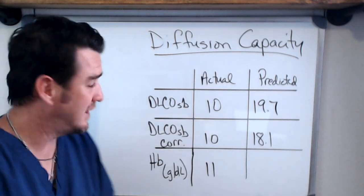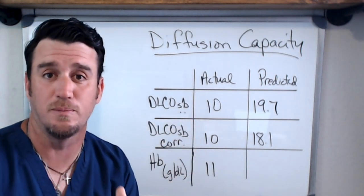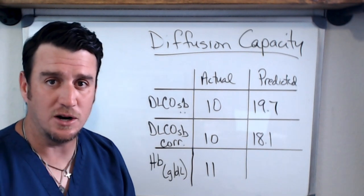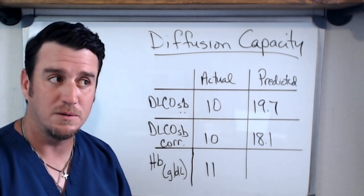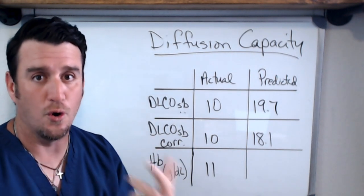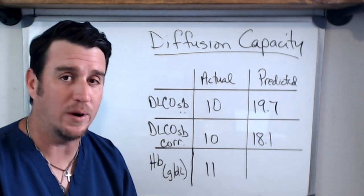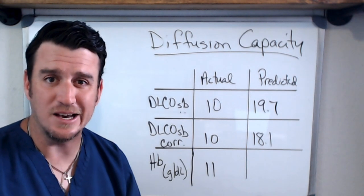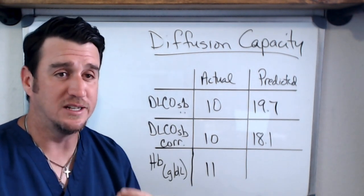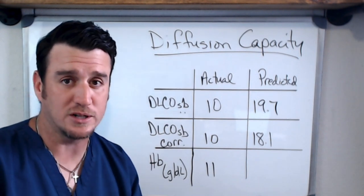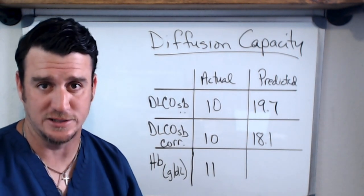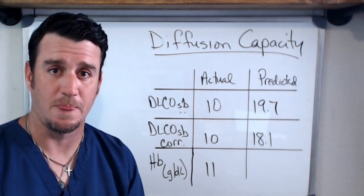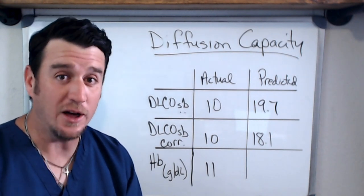Now what will cause the DLCO to be decreased? Any pulmonary lung disease, obstructive or restrictive. That's one of the big key points here I want to make is when you're looking at pulmonary function tests, the DLCO doesn't really help you differentiate between an obstructive lung disease or restrictive lung disease because both can cause a decreased DLCO.